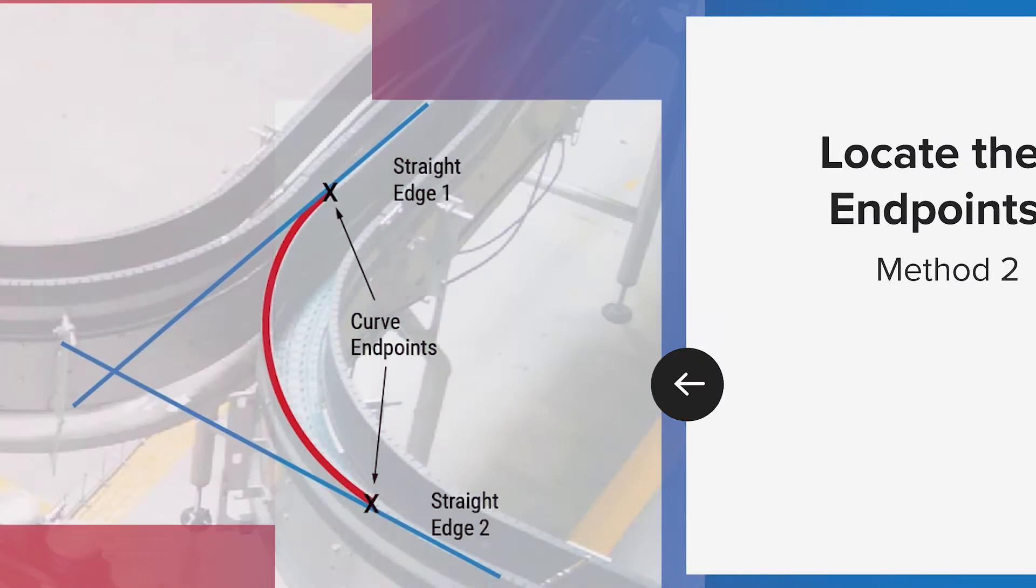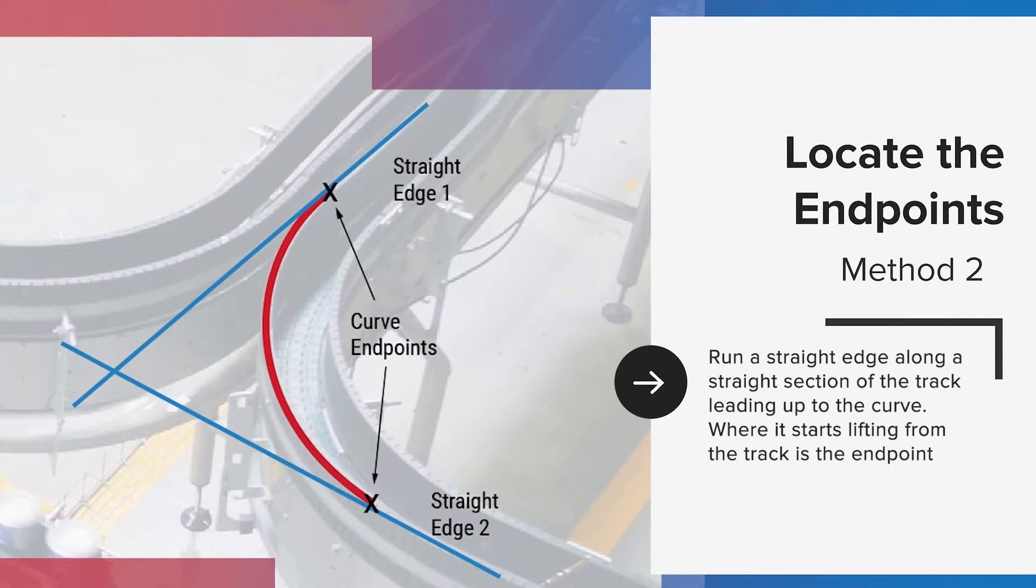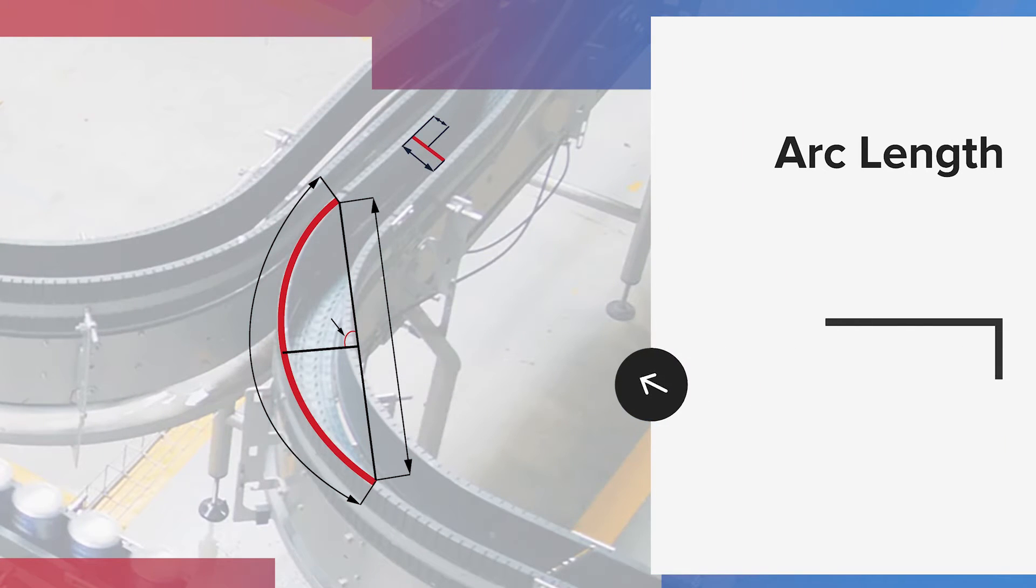Method one: run a straight edge along the outside of the curve to find where it sits flat. That is an endpoint. Method two: run a straight edge along the straight section of the track leading up to the curve. Where it starts lifting from the track is an endpoint.